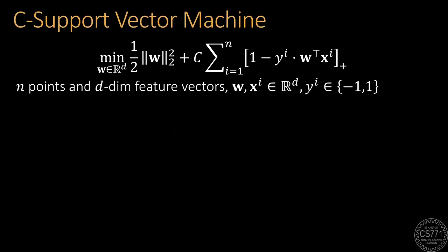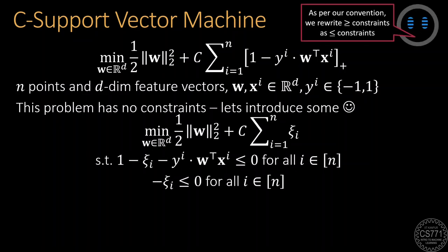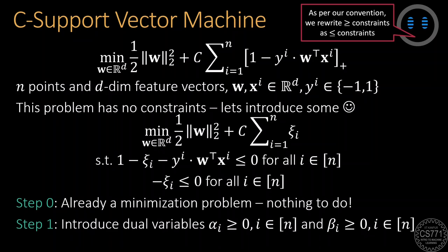Recall that the CSVM formulation is designed to learn a linear model for a binary classification problem. Here is the optimization problem with N training points and D-dimensional features. Today, we will see how to solve this problem in the dual. Since the hinge loss form of the problem does not have any constraints, we need to introduce some in order to proceed with the dual creation process. Fortunately, in this case, we already know of another form of the CSVM problem that does have constraints. For sake of simplicity, we have converted all constraints to less than equal to constraints.